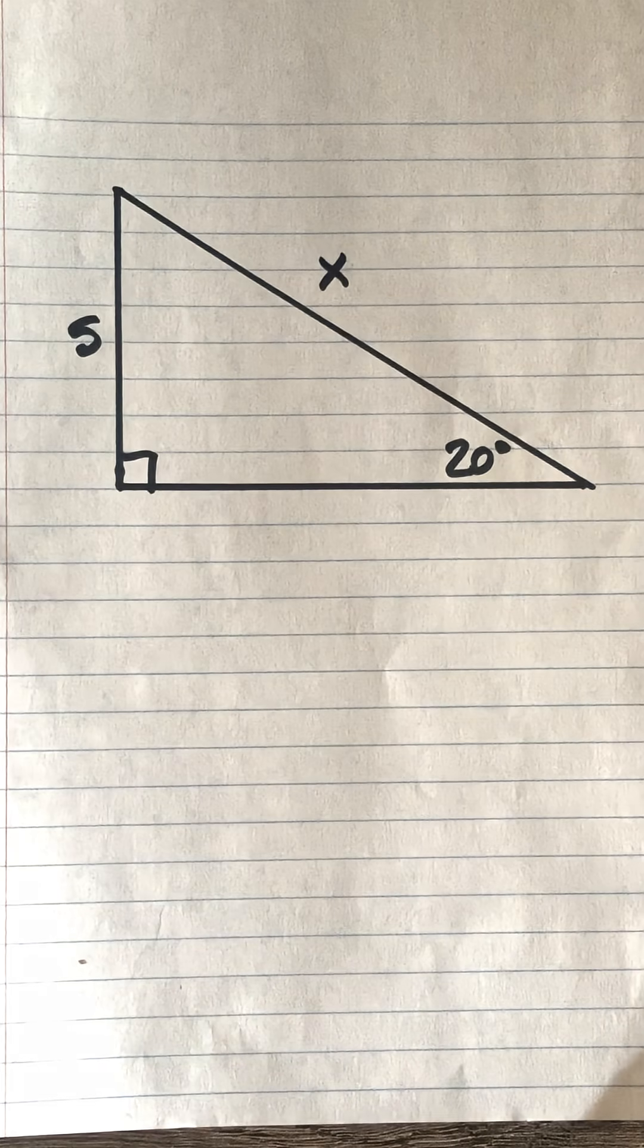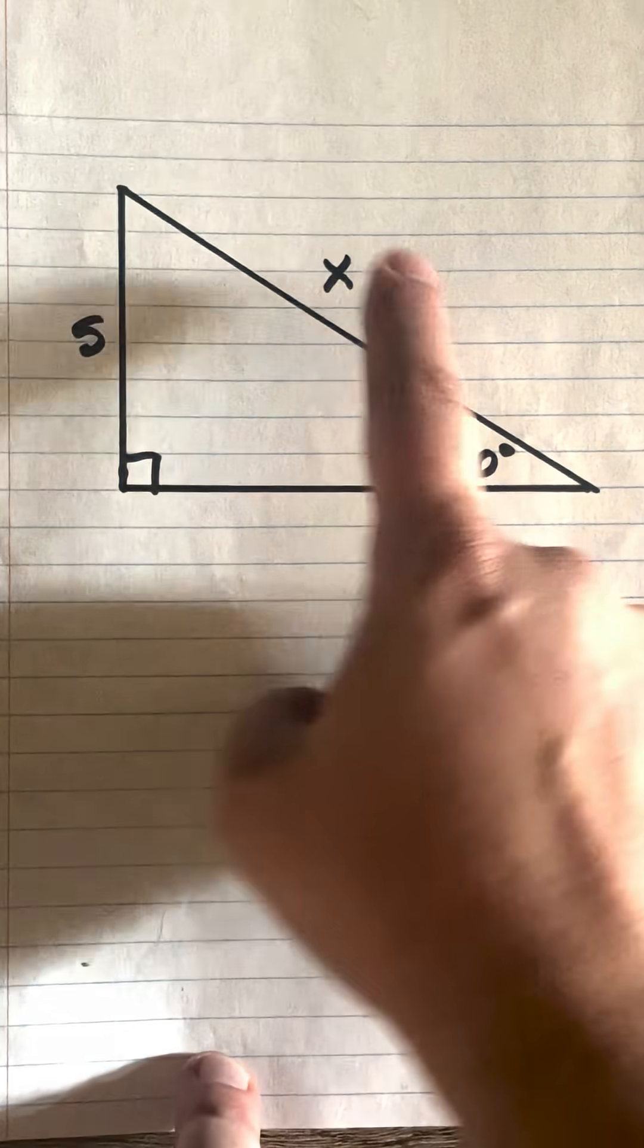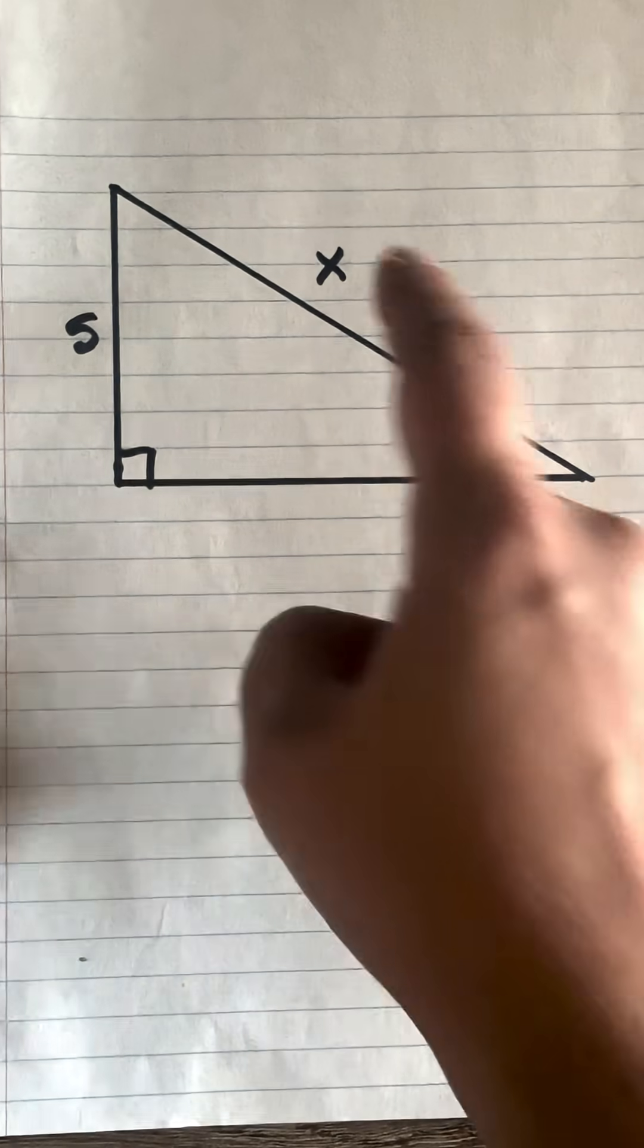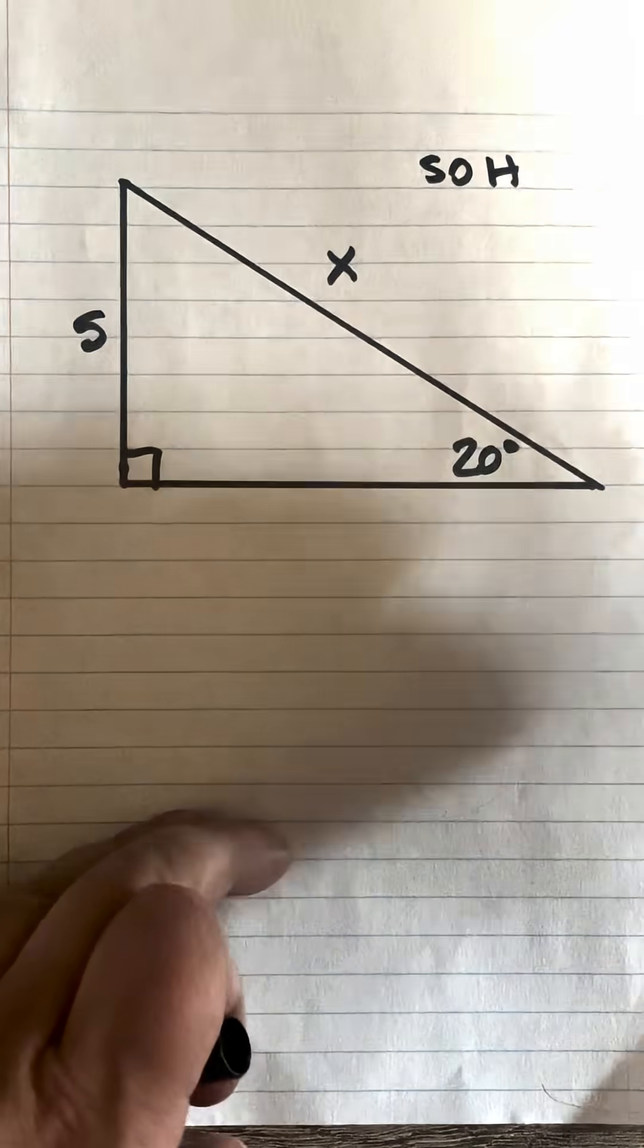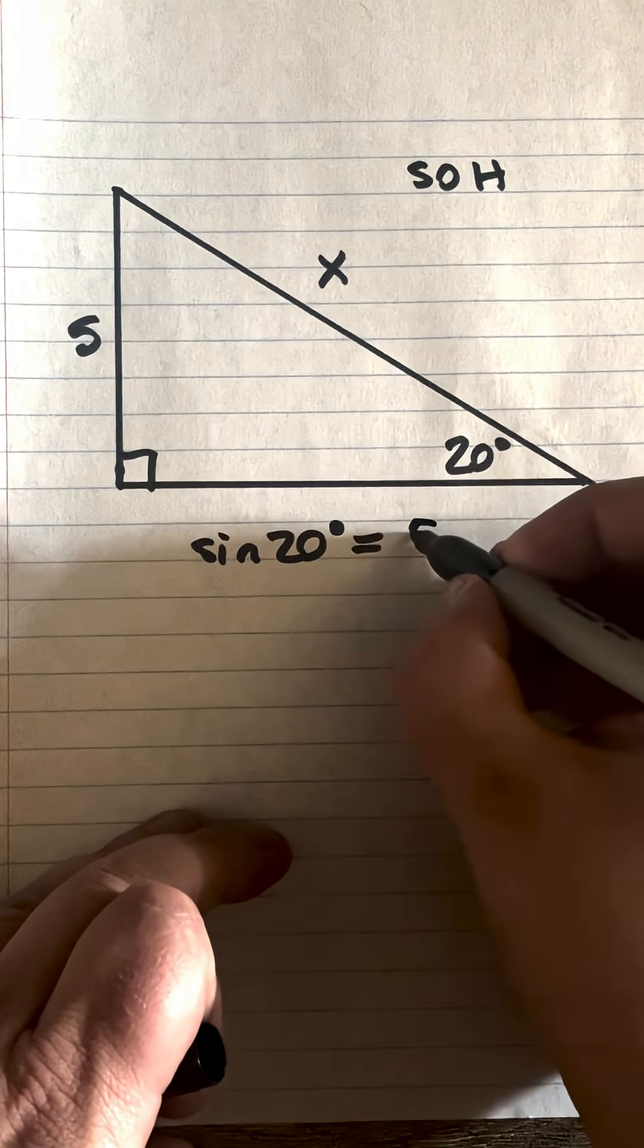Let's solve for x, which is the hypotenuse. We've got angle 20 degrees, opposite side is 5, and x. With opposite and hypotenuse, from SOH CAH TOA, that's opposite over hypotenuse, so sine of 20 equals opposite 5 over hypotenuse x.